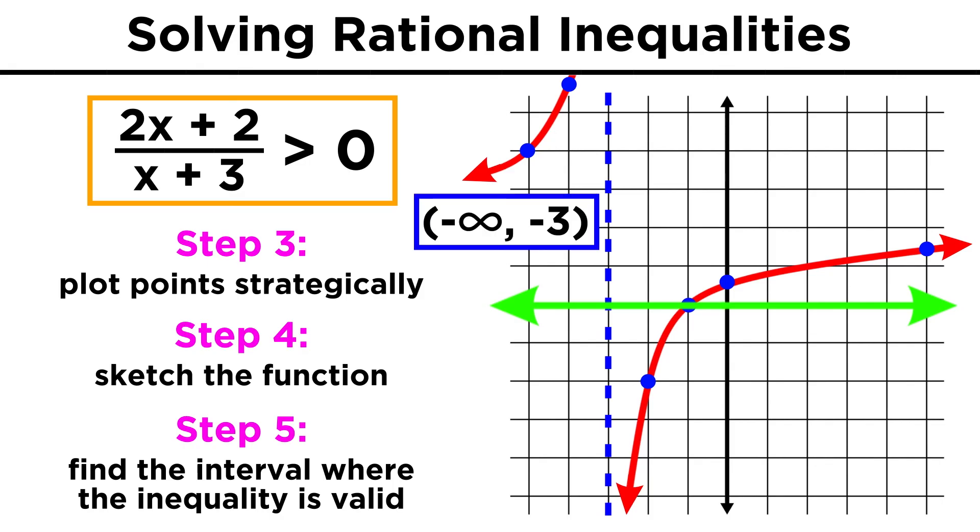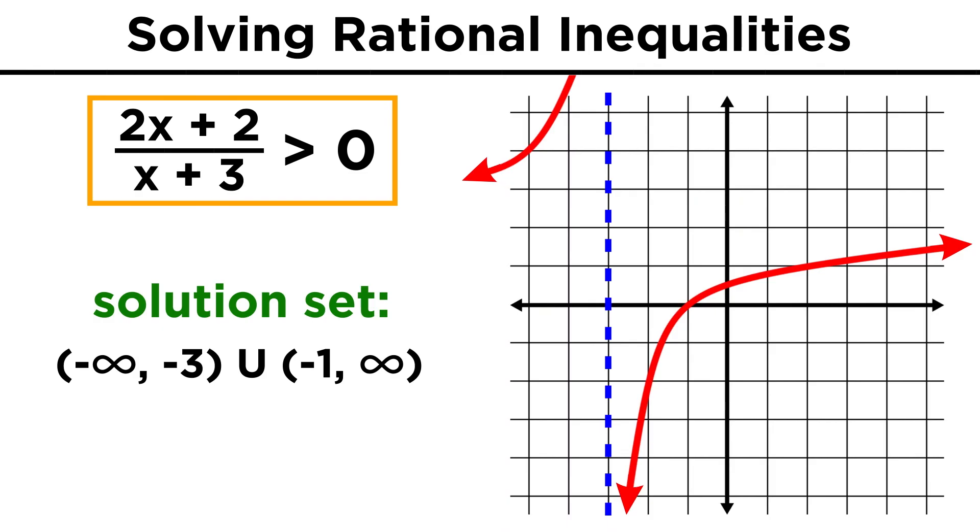That would be, from negative infinity up until negative three, then from negative three to negative one, the function is negative, and then beyond negative one, the function is positive again. So we get negative infinity to negative three, and negative one to positive infinity, both exclusive, so we use parentheses, and we put a U for union in between, meaning these two intervals together comprise the solution of the inequality.